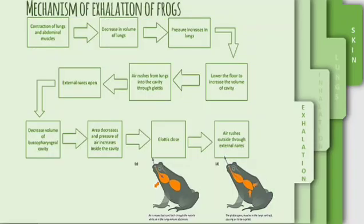Now let us turn to the mechanism of exhalation of frogs. In the initial stage, the lungs and abdominal muscles will contract. Secondly, the volume of the lungs will decrease. Thus, the pressure in the lungs will increase. Before the air rushes from the lungs into the cavity through the glottis, the floor of the buccal pharyngeal cavity will lower to increase the volume of the cavity. Next, the external nares are opened, then followed by the volume of the buccal pharyngeal cavity decreasing. At the same time, the pressure of air inside the cavity will increase. Lastly, the glottis will close and air rushes outside through the external nares.